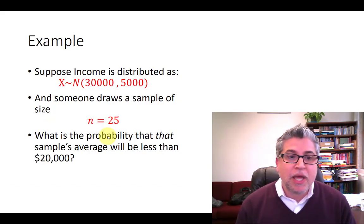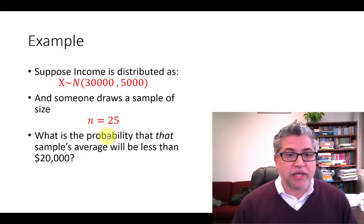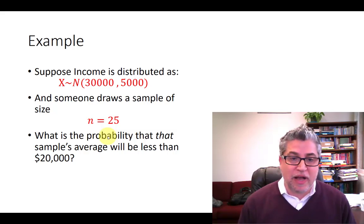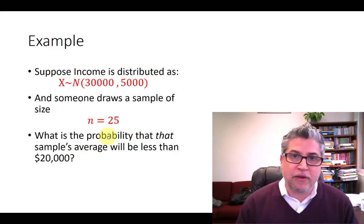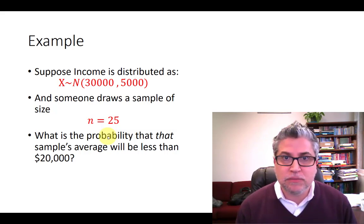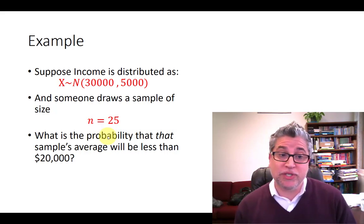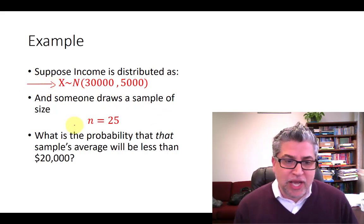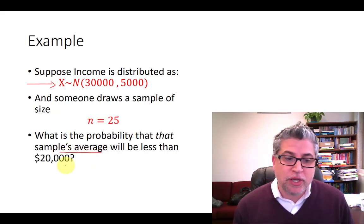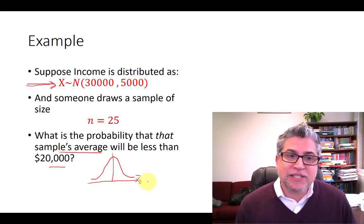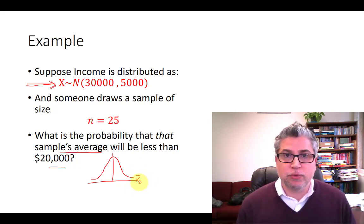So here's an example of how to use that. Let's say that we have a distribution of income distributed normally with a mean of $30,000 and a standard deviation of $5,000. Somebody draws a sample of size 25. What's the probability that the mean you calculate from your particular sample has an average income of $20,000 or less? I'm not saying what's the probability that any one particular person has an income less than $20,000 — that would be sampling from the parent distribution. Instead, the question asks what's the probability that we would get a sample average that's less than $20,000? So rather than looking at the distribution of x's, we need to be looking at the distribution of x̄. That's exactly what the central limit theorem tells us.